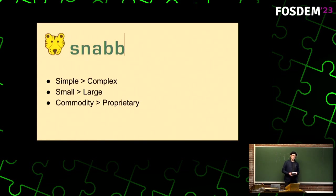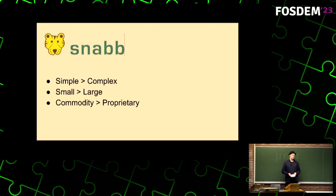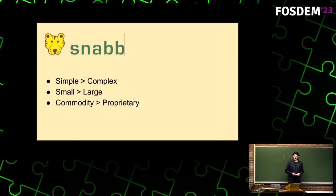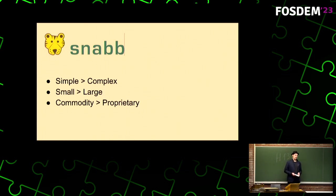SNAP is built with three core values in mind: we prefer simple designs over complex designs, we prefer our software to be small rather than large, and we are open. You can read the source, you can understand it, you can modify it, and you can rewrite it.